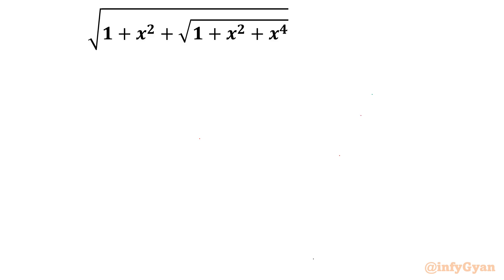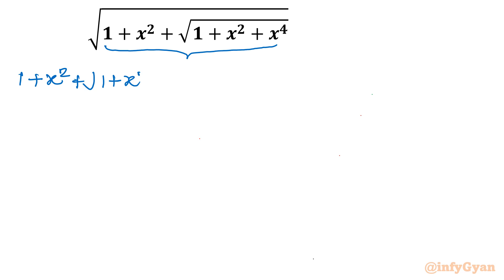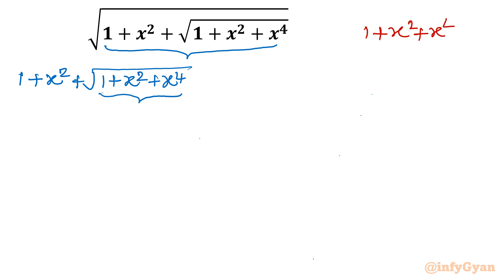I will begin with the radicand term, this term separately. The expression inside is 1 plus x square plus square root of 1 plus x square plus x power 4. There is again one radicand, so I will consider this radicand separately: 1 plus x square plus x power 4.